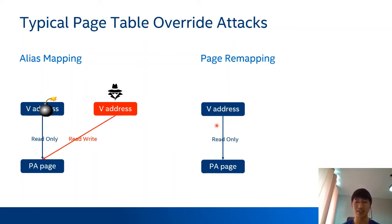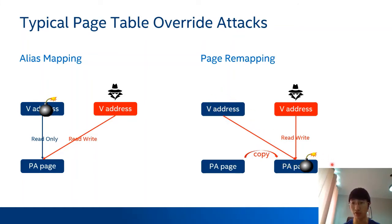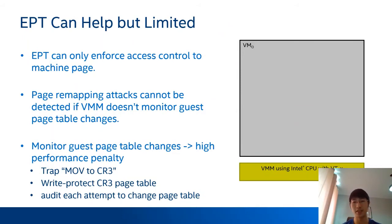The other attack is page remapping. In this attack, the adversary doesn't need to modify the real physical page. The attacker just copies the content from the original page to a new physical page, modifies the content, and then redirects the original virtual address to the new physical page. Some VMMs use the EPT to enforce access control and enhance guest kernel security. But as the EPT is only responsible for translation from the guest physical address to host physical address, it can't enforce the translation from guest virtual address to guest physical address. So even with access control in EPT, the VM's kernel is still vulnerable to page remapping attacks.